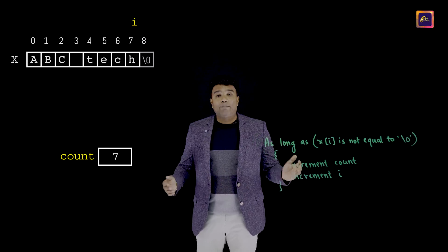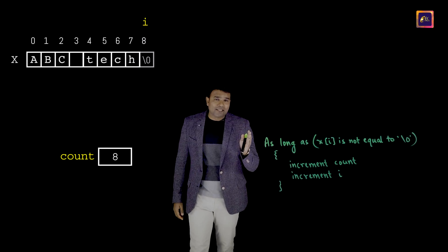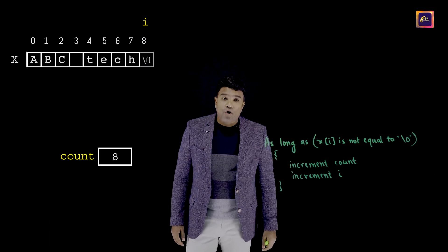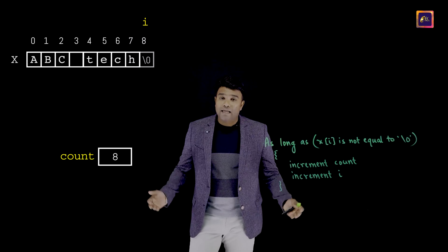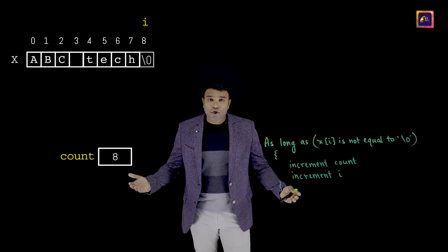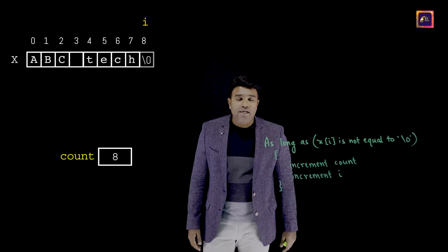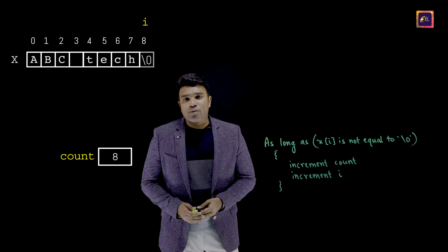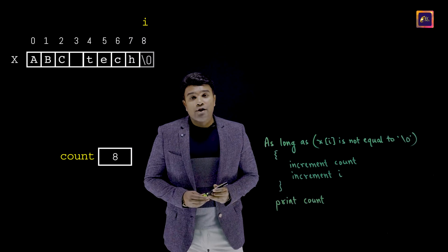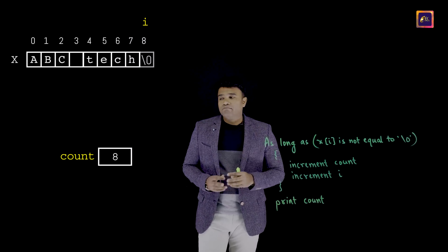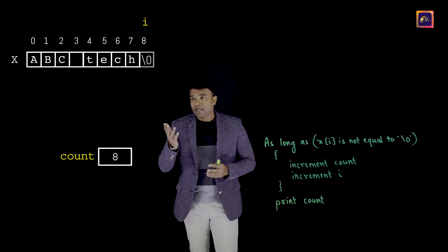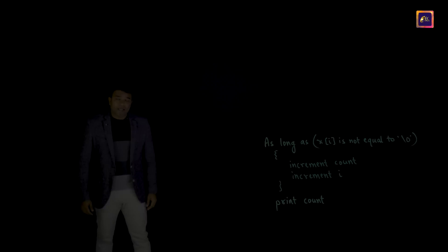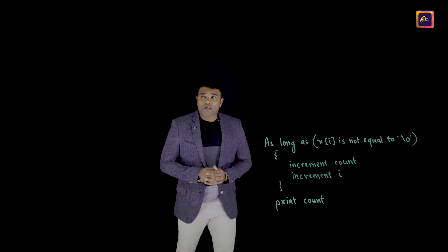Proceeding this way, we finally reach a point where x[i] happens to be null. The logic specifies that as long as x[i] is not equal to null, the loop keeps proceeding. Now that x[i] is null, control comes out of the loop. All I have to do is print the count value, and the output will be eight.